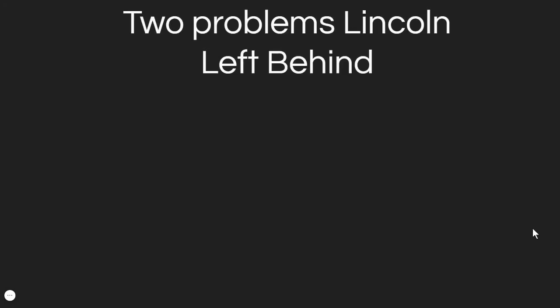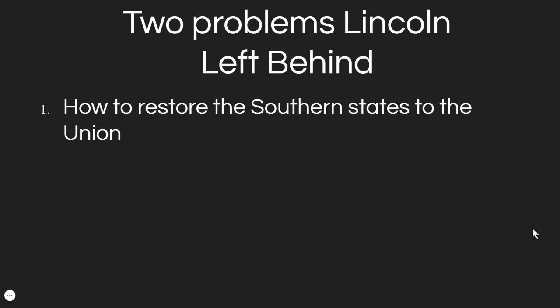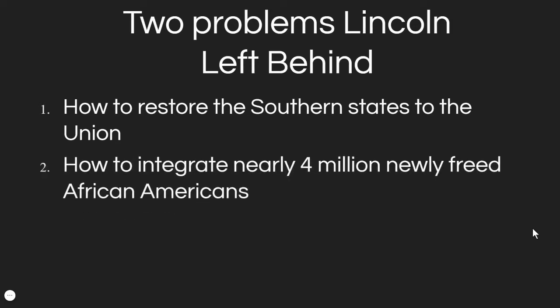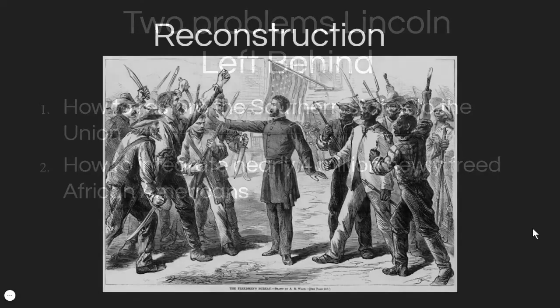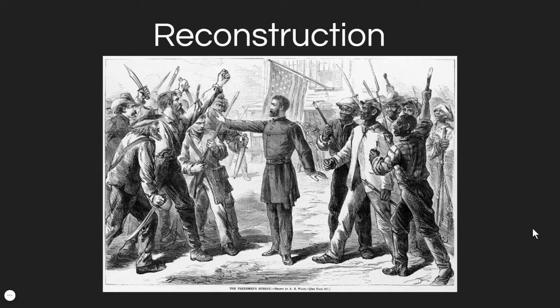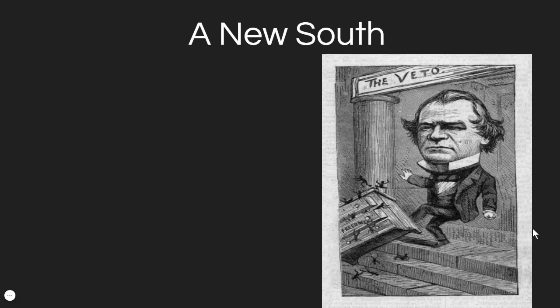Five days after the major surrender, because of the actions of one individual, the president is dead, and we're left with two major problems. Number one: how to restore the southern states to the Union — do they get to come back automatically, is there punishment? And second: how do you integrate nearly four million newly freed African Americans into the country? They are no longer slaves, but how do you bring them into the nation? Those are the questions we now have to address under Reconstruction.